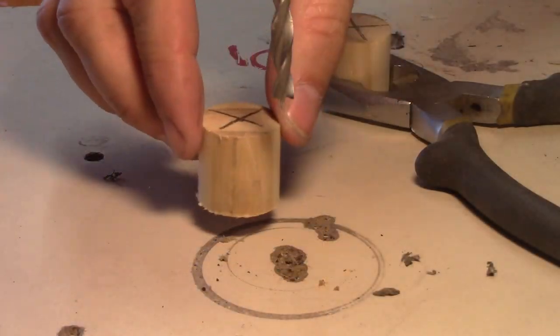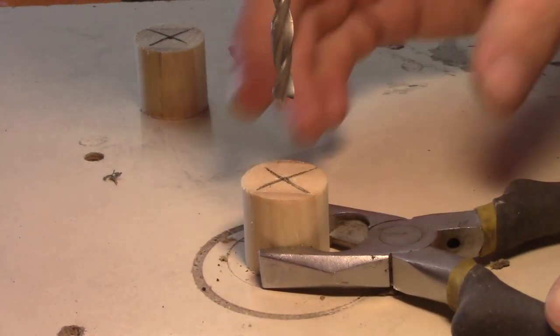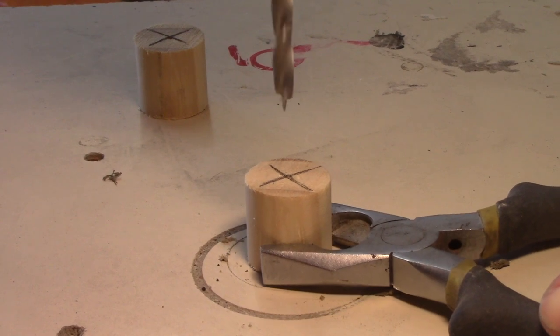Now we're going to drill through the center of all these dowel pieces we've cut. We're just holding with pliers here because it's so small. We'll just start drilling.